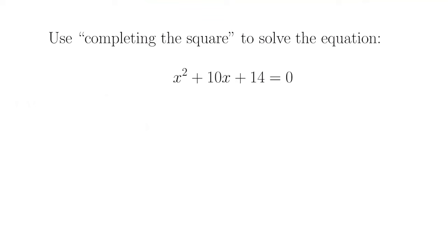Now let's use completing the square to solve an equation, and this is going to help us show how to derive the quadratic formula. We have x squared plus 10x plus 14 equals 0. Notice this can't be factored — things that multiply to get 14 are 1 times 14 or 2 times 7, and none of these will work.